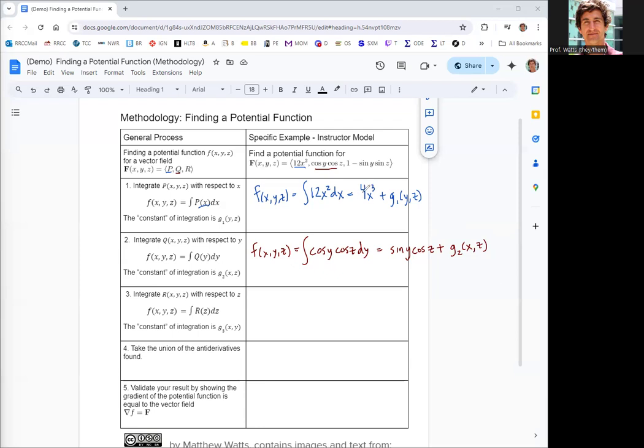The last one of these is to take the third component function, which we're calling r, and integrate that with respect to z. So this one also depends on y and z, but now our variable of integration is z, and so we're treating y as a constant.